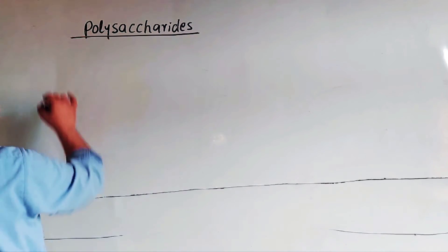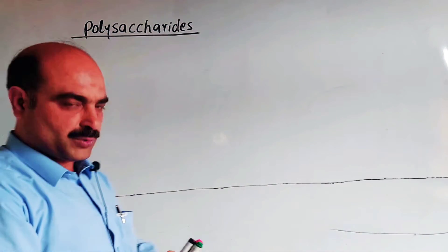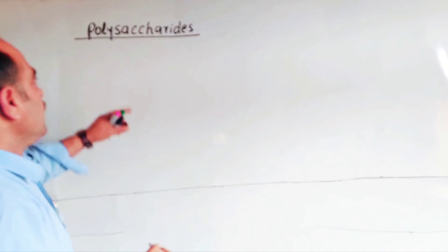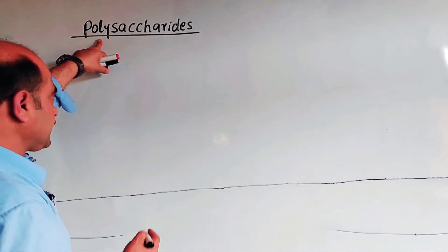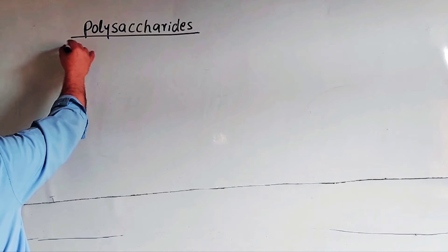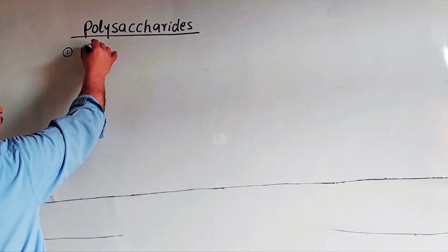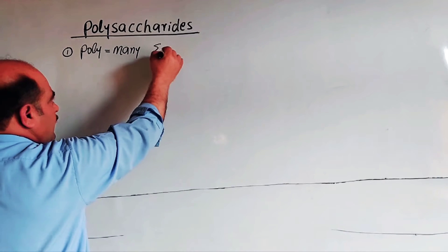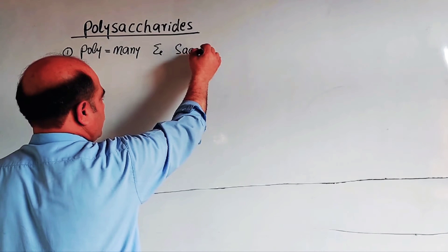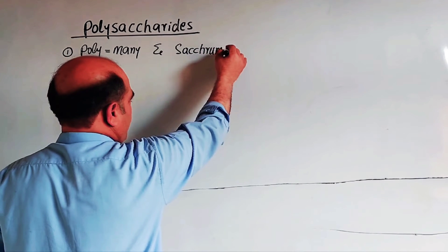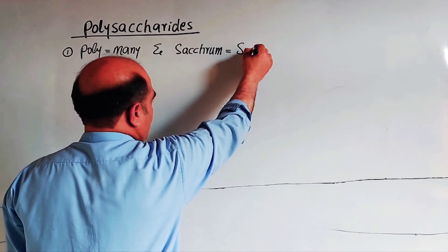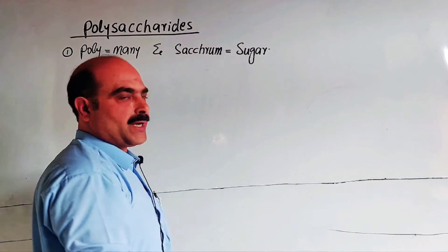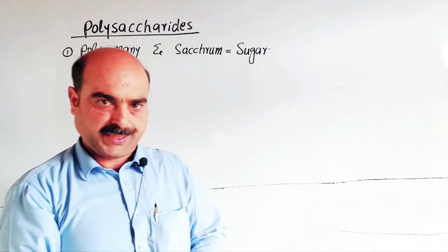Let's begin with the general properties and basic introduction: what are polysaccharides? Starting with the word meaning — the word 'poly' means many, and 'saccharide' means sugar.